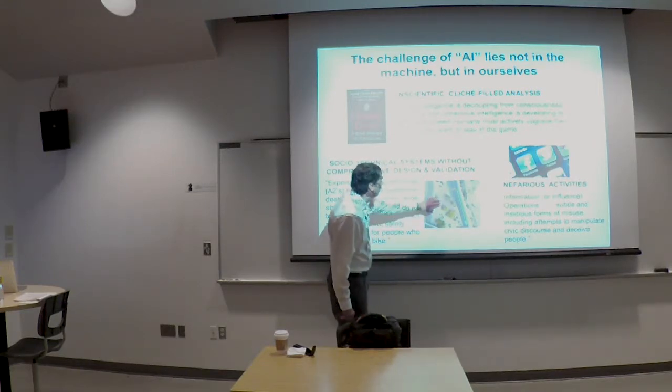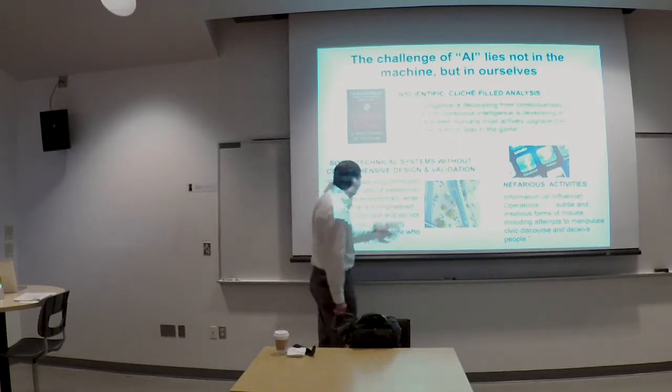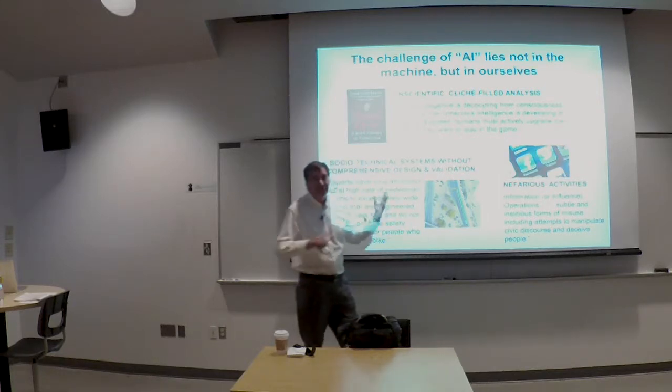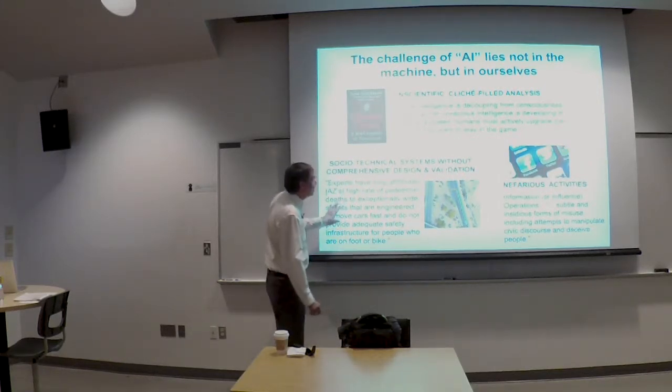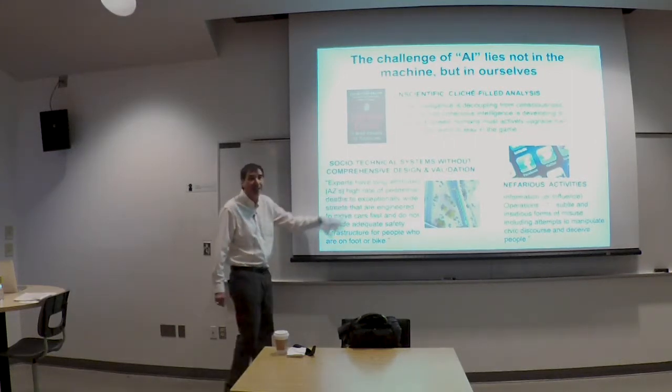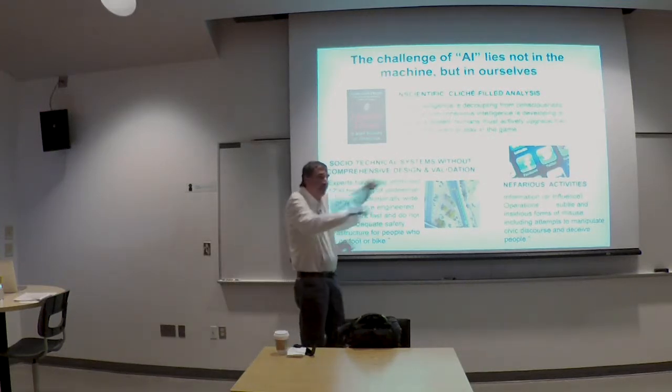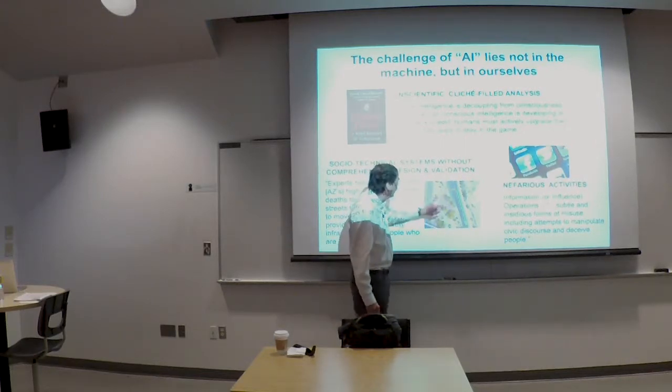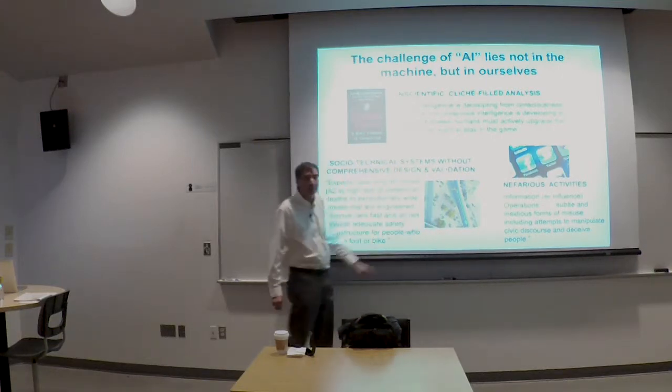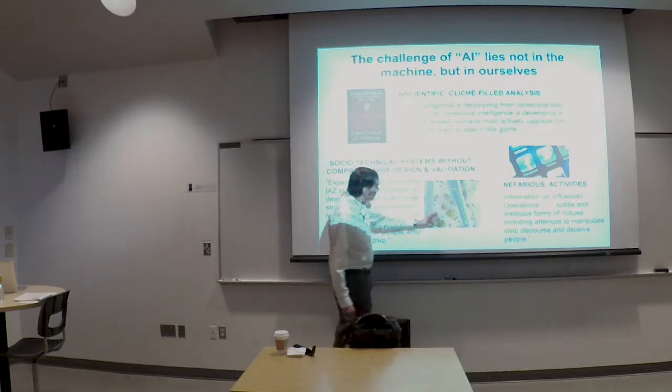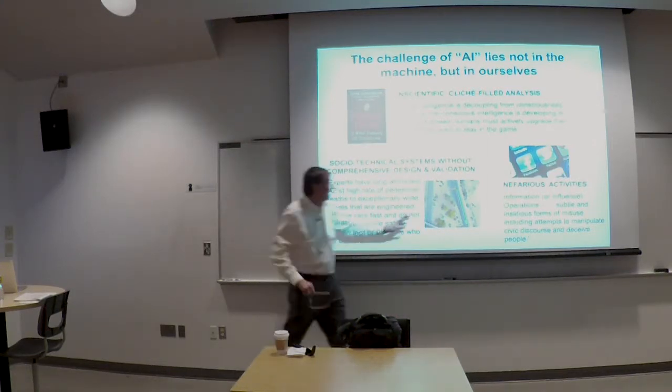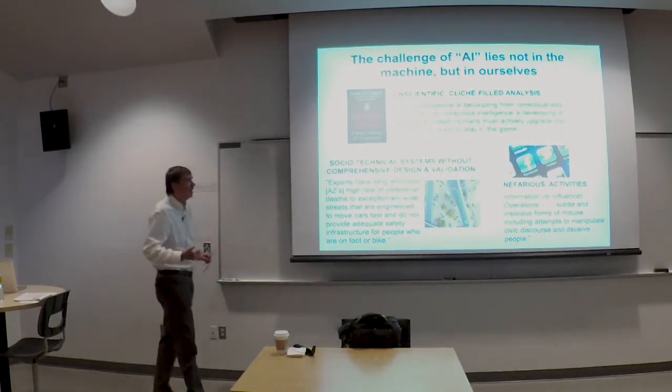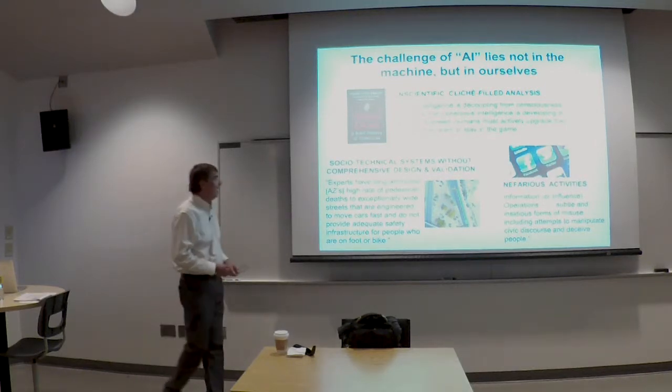What I think Harari and especially Kissinger should have written about is some real present problems that we have today. We have systems, sociotechnical systems, that are not being designed comprehensively with respect to the environment and how they're being used. Here's an example. I've been very interested in the Uber crash that occurred in Arizona where a pedestrian was killed. In the press, you'll find one side making the pedestrian look completely stupid, another side making the car look completely stupid. Very few people are mentioning that Arizona, in particular, has this very high rate of pedestrian deaths.